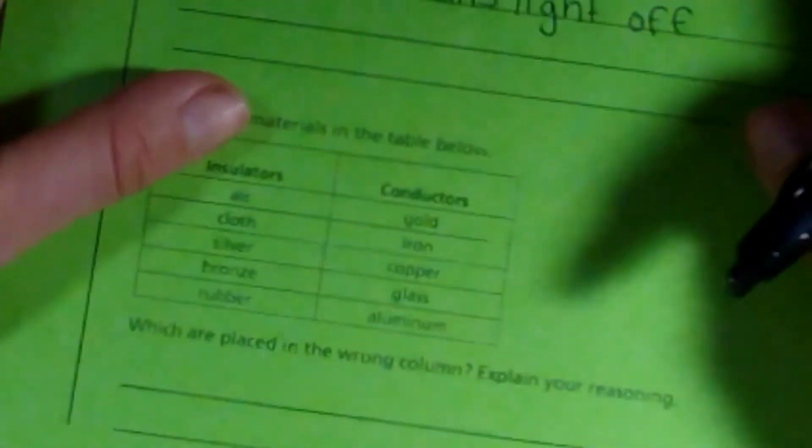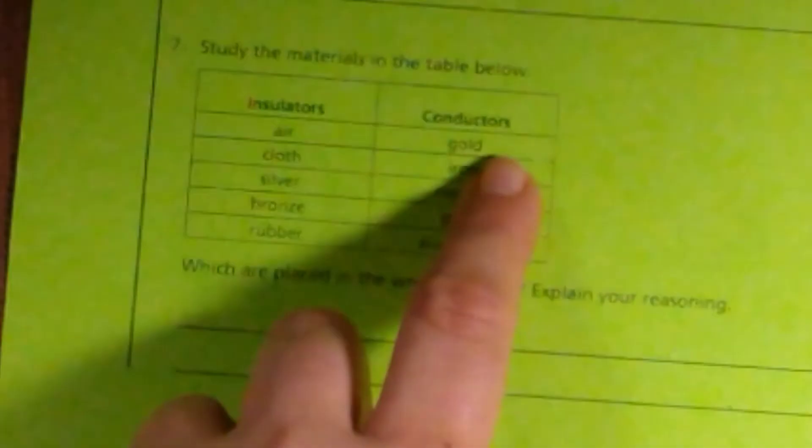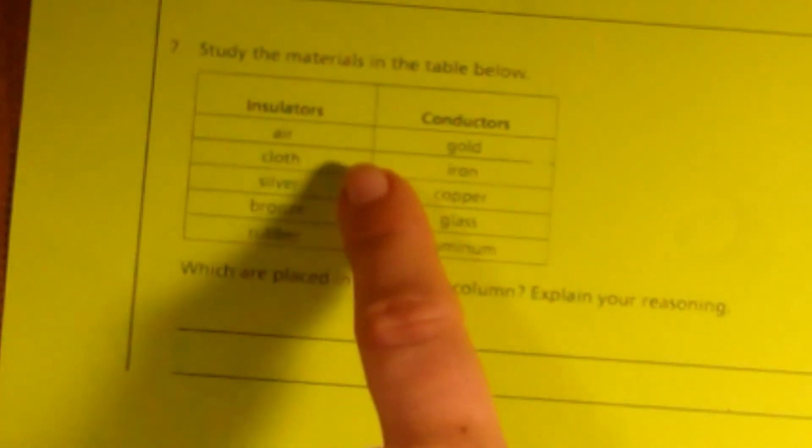Last one. Study the materials in the table below. Insulators: air, cloth, silver, bronze, rubber.